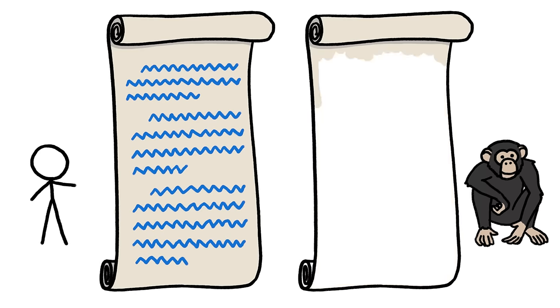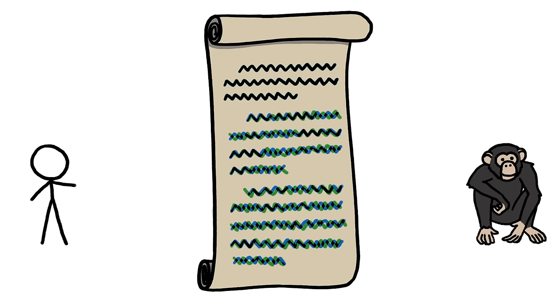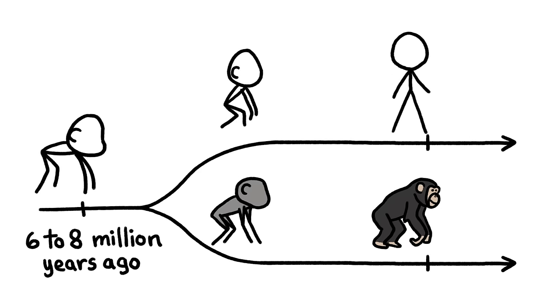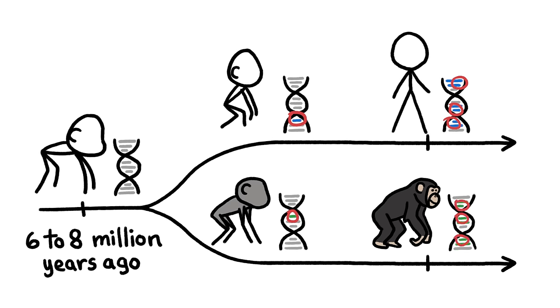But in reality, the human and chimp scrolls don't sync up so easily. In the six to eight million years since we split from our last common ancestor, chance mutations and natural selection have changed each of our genomes in radical and unique ways.